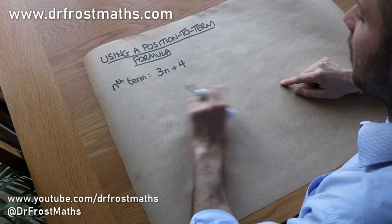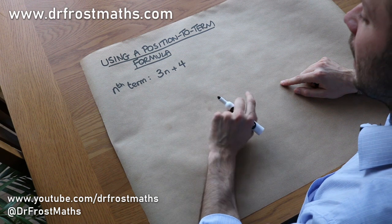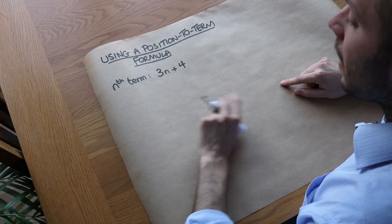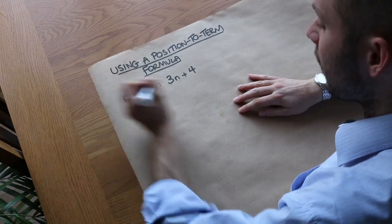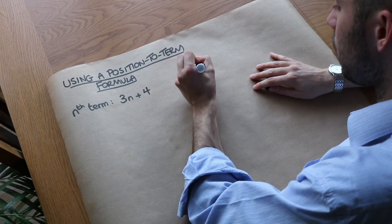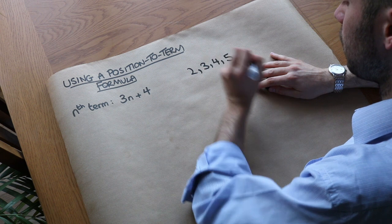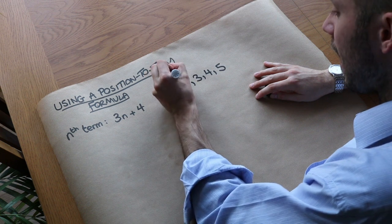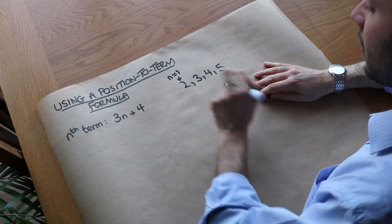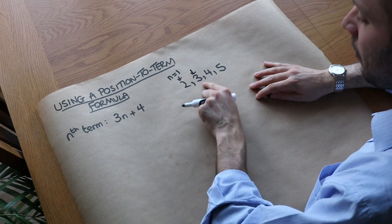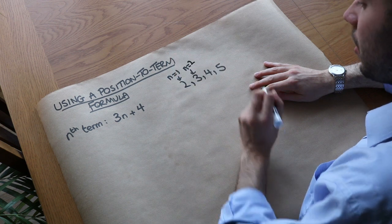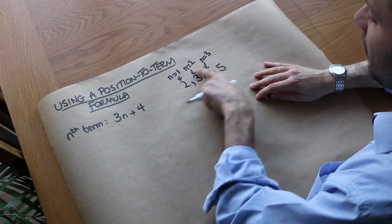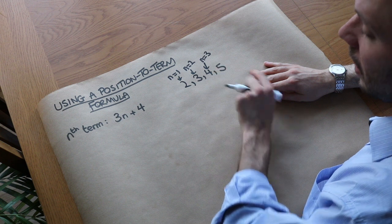Hello and welcome to this video on using a position-to-term formula — how we can generate a sequence using some particular expression in terms of n. What n represents is the position in the sequence. So if I had a sequence 2, 3, 4, 5, the first term is 2 and n would be 1, because n is the position in the sequence. The second term is 3, so n would be 2, n would be 3 for the third position, etc. So n represents what position you are in the sequence.